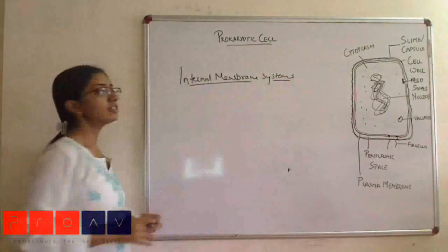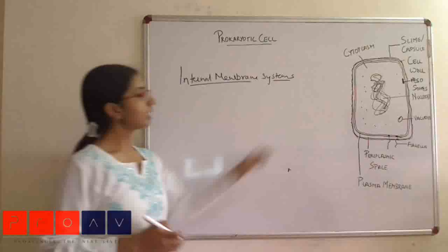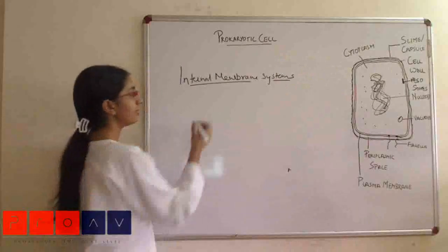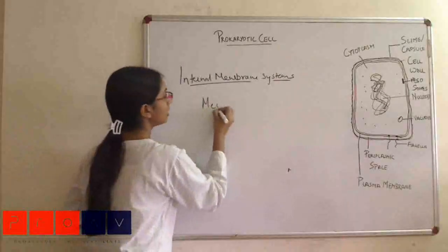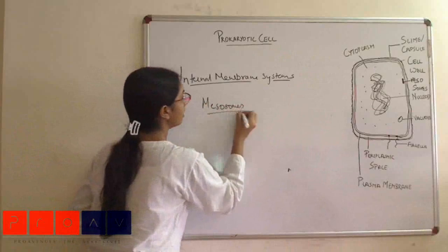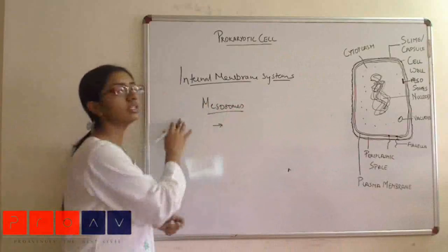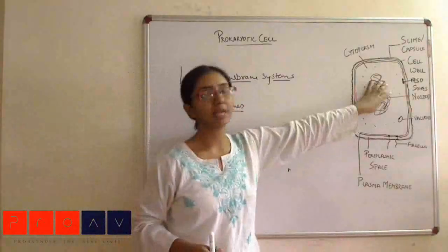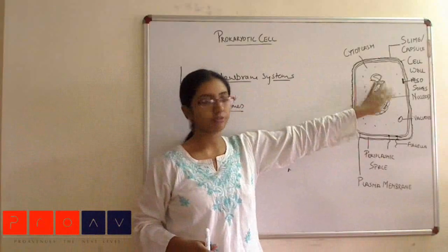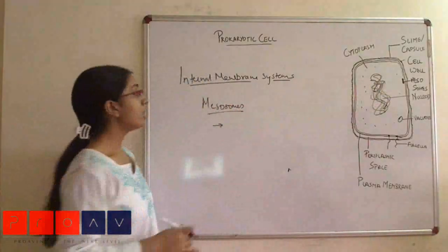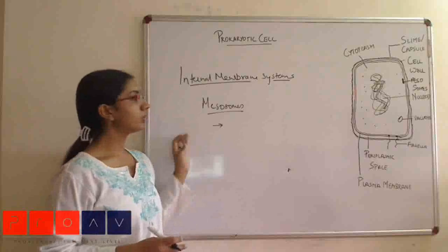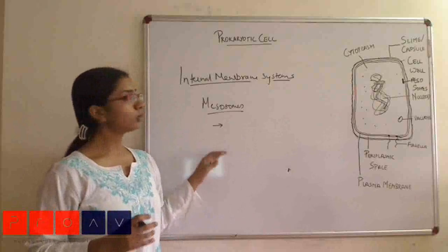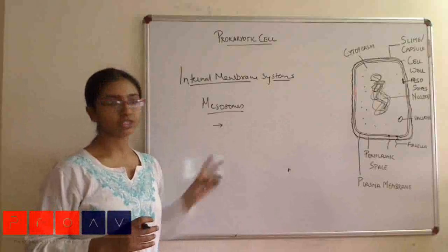There are various kinds of internal membranous systems associated with the plasma membrane. One of them is mesosomes. Mesosomes actually perform the function that mitochondria perform in the cell. They are generally associated with the plasma membrane, and it has been found that mesosomes are generally prominent when the cell is dividing, so they are also thought to be associated with nuclear division.